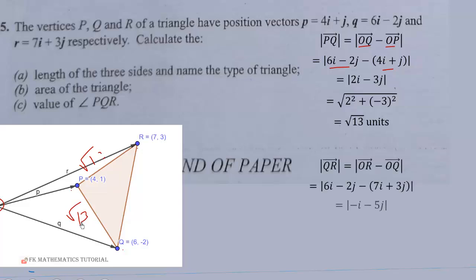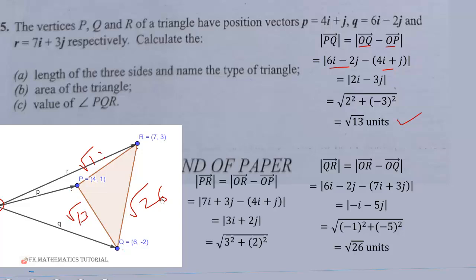Now, we have QR to be also root 26 units. So, we follow the same procedure as this. So, this is root 26 units. Then, we have now PR to be equal to root 13 units. So, root 13 units.